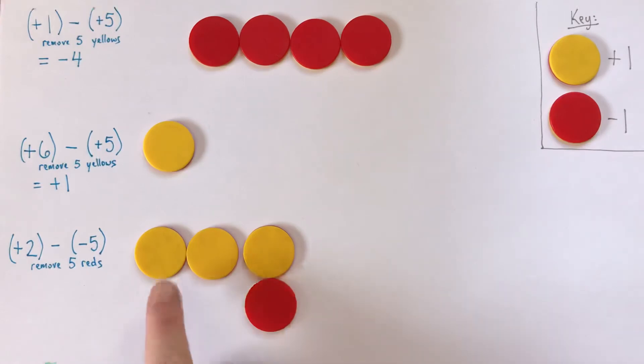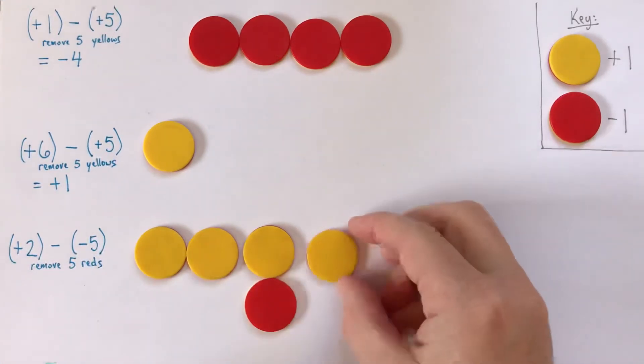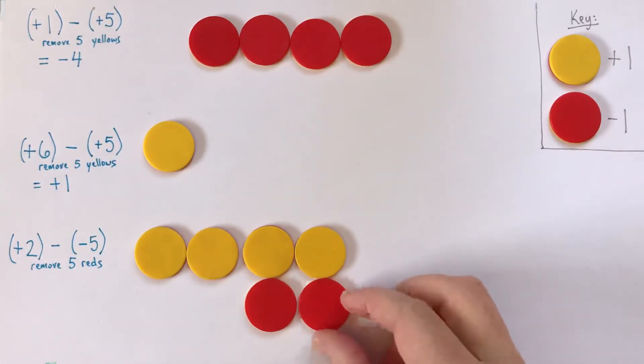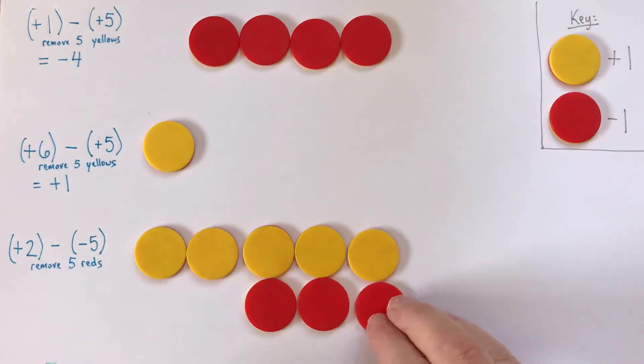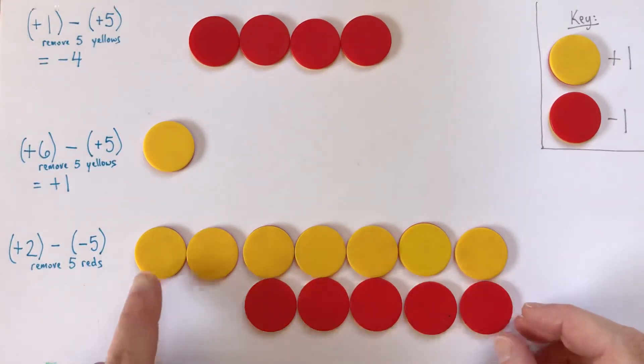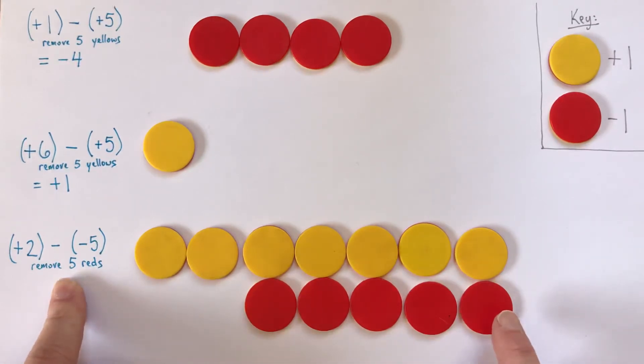So, this still shows positive 2. And it's still positive 2. Still positive 2. Still positive 2. I'm going to keep doing this until I have enough reds to take away. Still positive 2. All of this is worth zero. And now I do, in fact, have enough reds. So, I can remove, I can subtract negative 5 now.